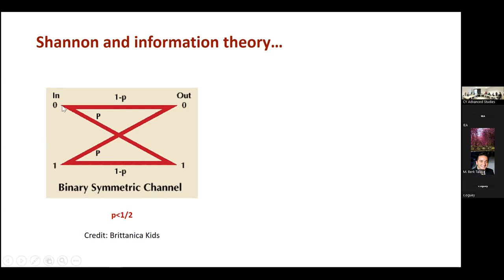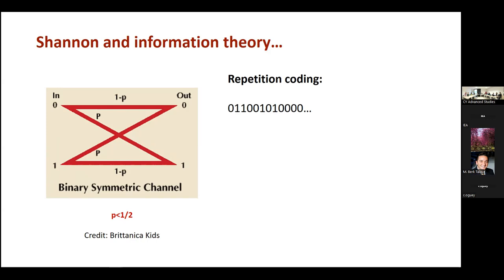If you send a zero, there is a chance it will flip and become a one, introducing an error. By symmetry of the channel, the same things may happen to the bit one — it can remain the same with probability one minus p, or it can flip and become a zero. In the early days of coding theory, many decades ago, people were concerned with how to protect yourself against these ordinary, most basic types of bit flip errors, or substitution errors as we call them.